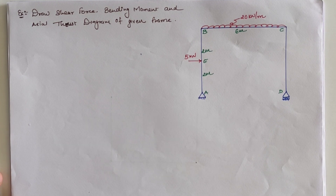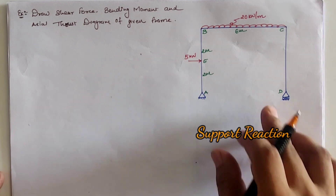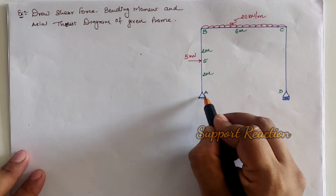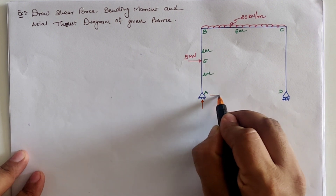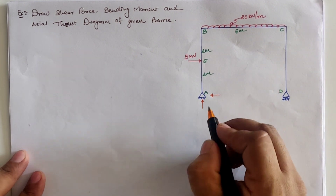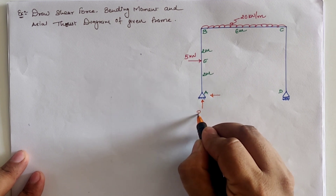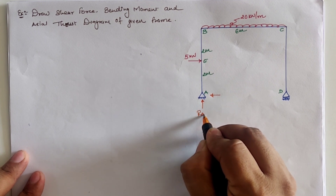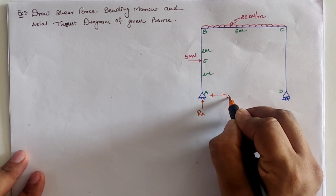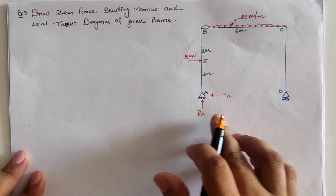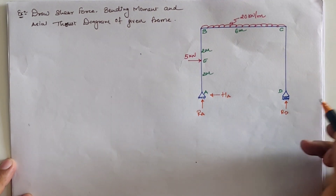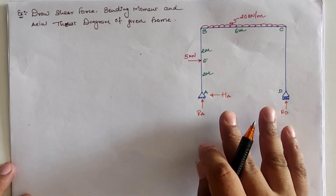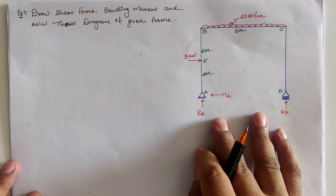For the analysis, we first have to calculate the support reactions. At a hinge support we have two reactions: one vertical and one horizontal. The vertical reaction is R_A and the horizontal reaction is assumed as H_A. At the roller support, we have one reaction R_D.